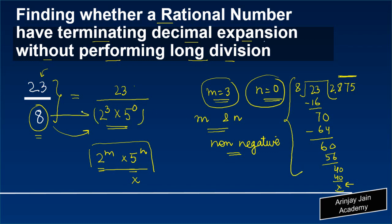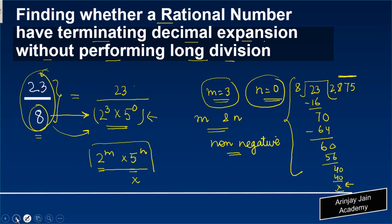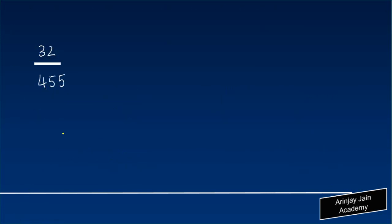Instead of doing this long division method, we could have found out simply by putting the denominator in the form 2 to the power m into 5 to the power n. If it can be expressed such that m and n are non-negative integers, that means the rational number has a terminating decimal expansion.